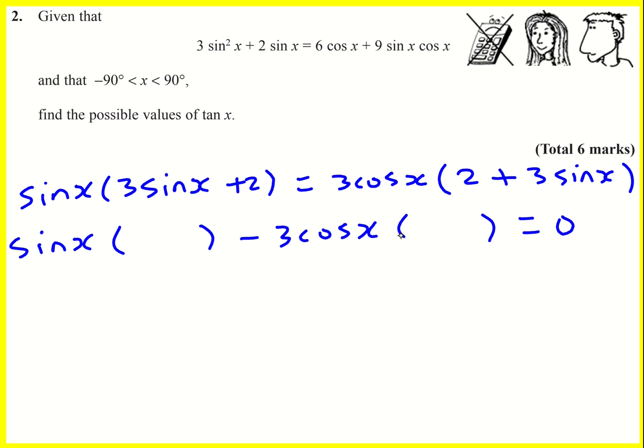And what I can do is because I've got this common factor bracket, I can actually bring it together into a double bracket. It's going to be sine x minus 3 cos x, and then that bracket that I had, 2 plus 3 sine x equals 0. And I've managed to factorize it into a double bracket. Maybe you managed to do that another way. I suppose you could replace sine x by a and cos x by b, and you might be able to see it a bit more easily.